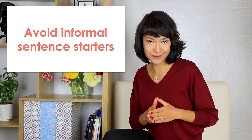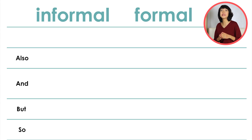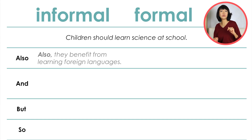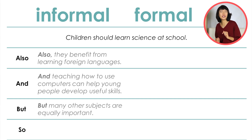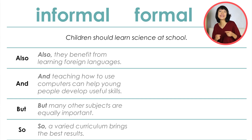Avoid informal sentence starters. Conjunctions also, AND, BUT, SO can be used in any type of writing, but they become too informal if you use them at the beginning of sentences. Here is what I mean: 'Children should learn science at school. Also, they benefit from learning foreign languages. And teaching how to use computers can help young people develop useful skills. But many other subjects are equally important. So, a varied curriculum brings the best results.' All these sentences sound informal because they begin with Also, AND, BUT, SO.